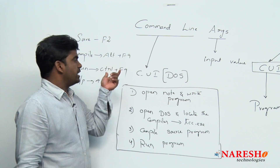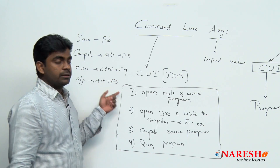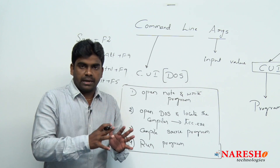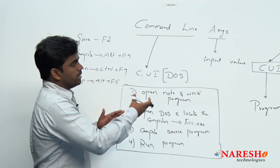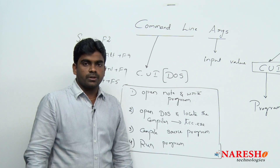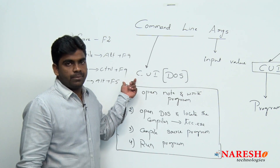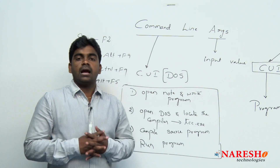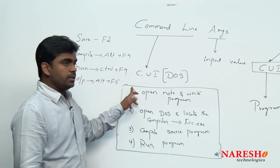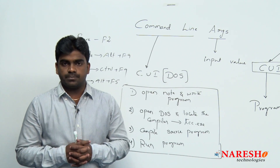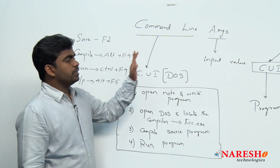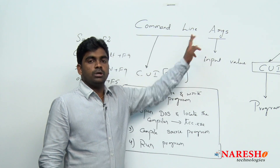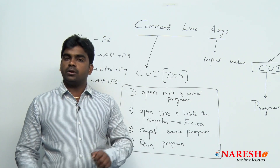Whenever you press Alt+F9, Ctrl+F9, or Alt+F5, this is the background process. Already we are good in C programming language because command line arguments is almost the last concept in C language. You are a bit perfect in C programming language, so at least now you should understand the correct way of writing, compiling, and executing C applications. That is why we have to follow the DOS operating system.